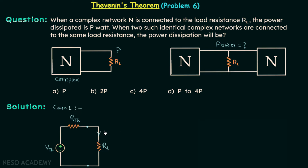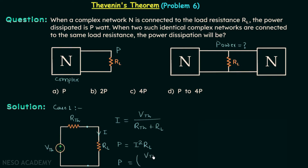Assuming the current to be I in this circuit, we have I equal to VTH divided by (RTH plus RL). The power dissipated through RL is equal to P, and P equals the square of current I multiplied by the load resistance RL. This completes case number 1.